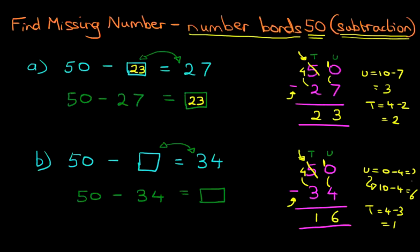And that's our answer, 16. Let's write this in the original question. 50 minus 16 equals 34. Okay. Now after a period of time, you will know which two digits add to make 50. We'll look at this in the second tutorial. Check that out.